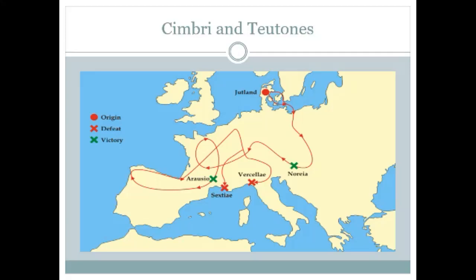Marius raised a new army, trained it, and went up into southern France to take on the German threat. He crushed the Teutones in a huge battle in 102 BC at Aquae Sextiae — in modern Aix-en-Provence in France. The Cimbri were defeated by the consul of 101 with the assistance of Marius at the Battle of Vercellae. Marius was now very much the chief man of Rome — a military popular hero catapulted to prominence by virtue of his military successes.